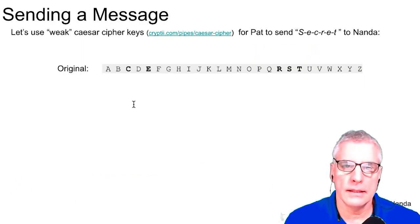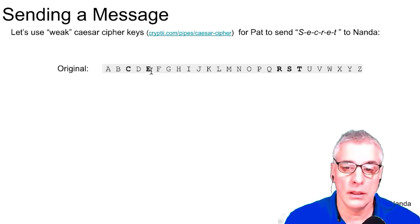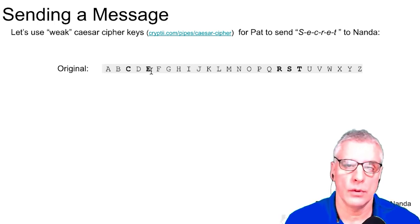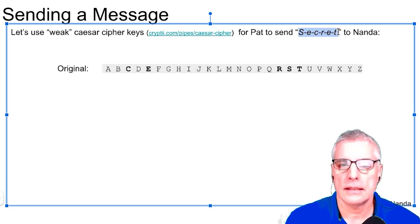So let's say that, and Caesar's cipher is considered a relatively weak cipher because if you're shifting just by one letter, well, you may be able to figure that out. But it's going to help us here to understand how we can, how we have these two locks and keys and how they work together. So let's say that we have the original message, and let's say we're going to send the letters S-E-C-R-E-T, secret, from Pat to Nanda.